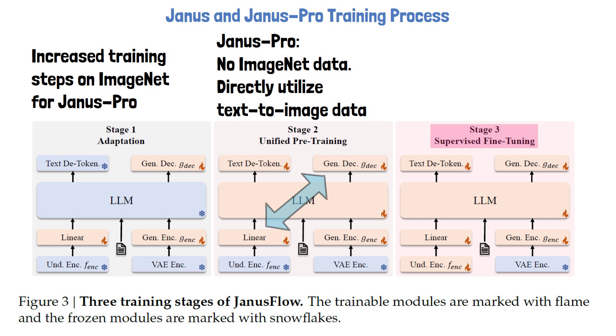Additional main changes in Janus Pro are the scaling up of data size utilized in training and model size. For model size, the LLM was scaled up from 1.5 billion parameters to 7 billion.